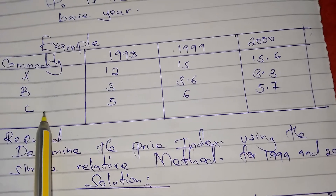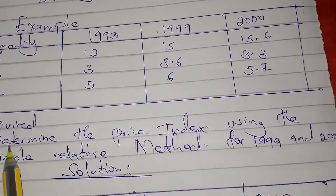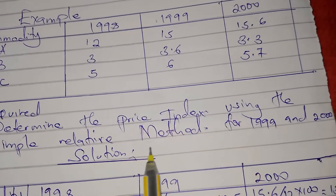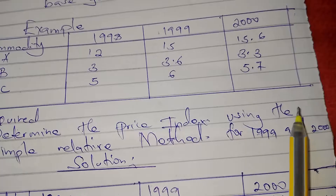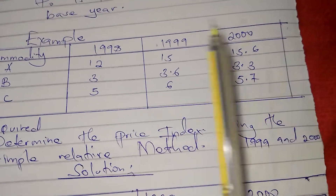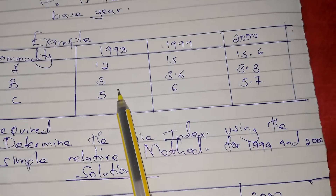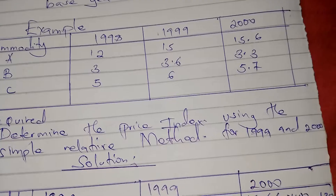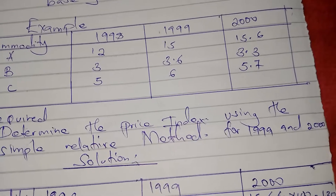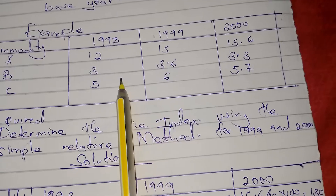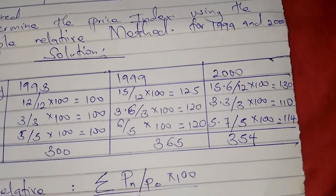They have given us commodities A, B, and C, along with prices for 1998, 1999, and 2000. We are required to determine the price index using the simple relative method for 1999 and for 2000. We will use 1998 as the base year, since if the base year is not indicated, you use the oldest or previous year as the base year.